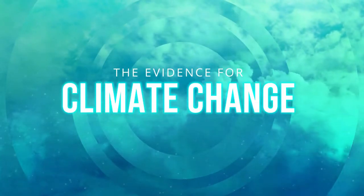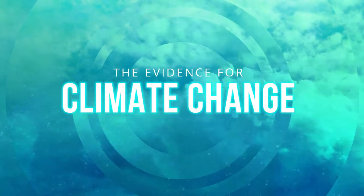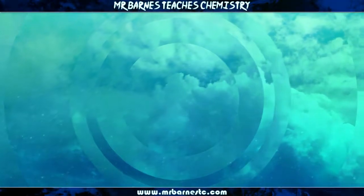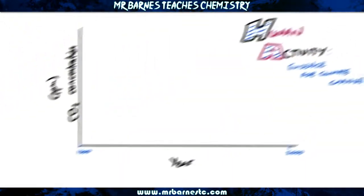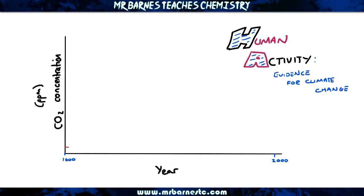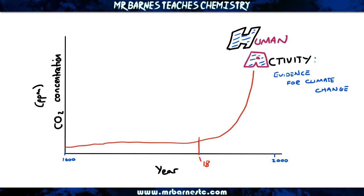Hi guys, welcome to this video looking at the evidence for climate change. First things first, I've got a graph here with the year on my x-axis and the carbon dioxide concentration on the y-axis. As you can see, it stays quite low until we get to a certain point where it starts to increase rapidly. That year where it starts to increase rapidly is 1850 — that is the year where the industrial revolution started.